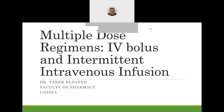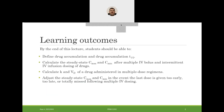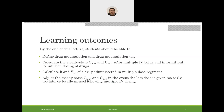Assalamu alaikum wa rahmatullahi wa barakatuh. Today we are going to discuss how to compute or calculate multiple dose regimens in case of IV bolus and intermittent intravenous infusions. We will discuss the principle of drug accumulation and drug accumulation T-half, and practice how to calculate C-max and C-min after multiple IV bolus and intermittent IV infusion dosing. We will also see how to calculate pharmacokinetic parameters and how to adjust C-max and C-min in case of doses given too early, too late, or totally missed.